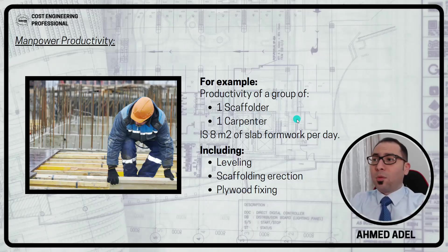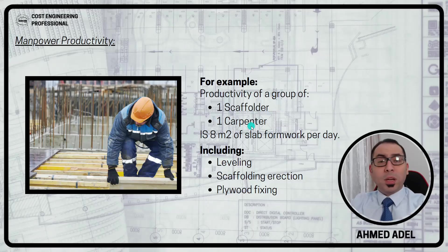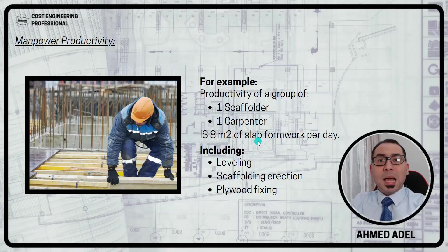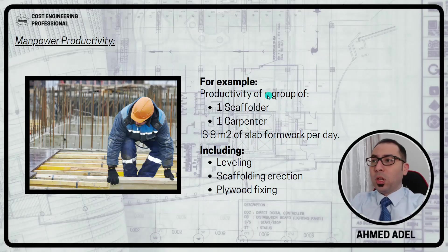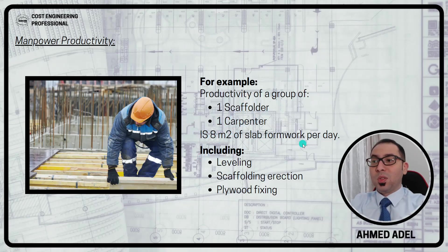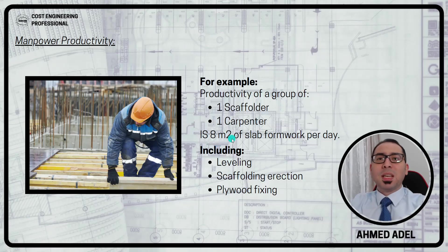If we are talking about formwork, for example, the productivity of a group of one scaffolder and one carpenter is, let's say, 80 square meters of slab formwork per day. So again, this 80 square meters is the productivity of this crew per day. One scaffolder and one carpenter can do 80 square meters of slab formwork per day.